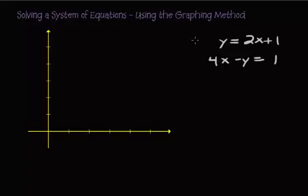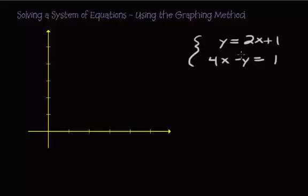Let's try this system. The steps are pretty simple: graph each line and see where they intersect, if they do in fact intersect. For y equals 2x plus 1, we can graph using the intercept method, or we can put it into slope-intercept form — it really doesn't matter.